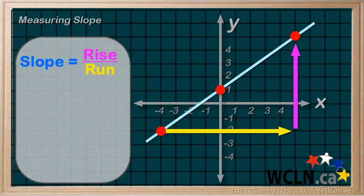And to keep things from being confusing, we'll consider the run to be positive to the right. So, we only have to consider the sign of the rise. In this case, the rise is going up. So, we know it will be positive.